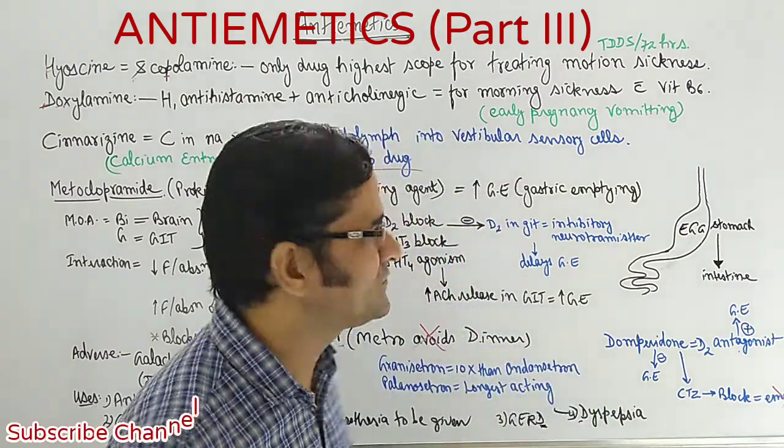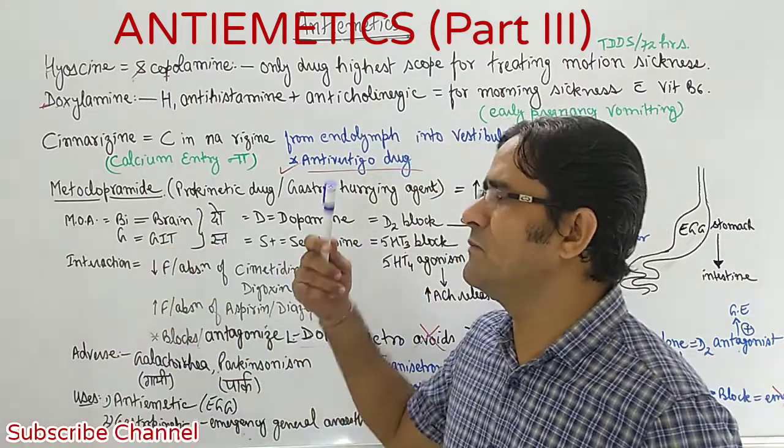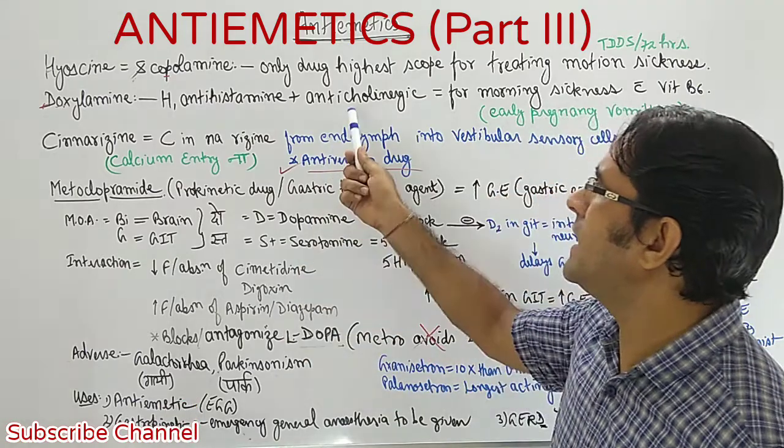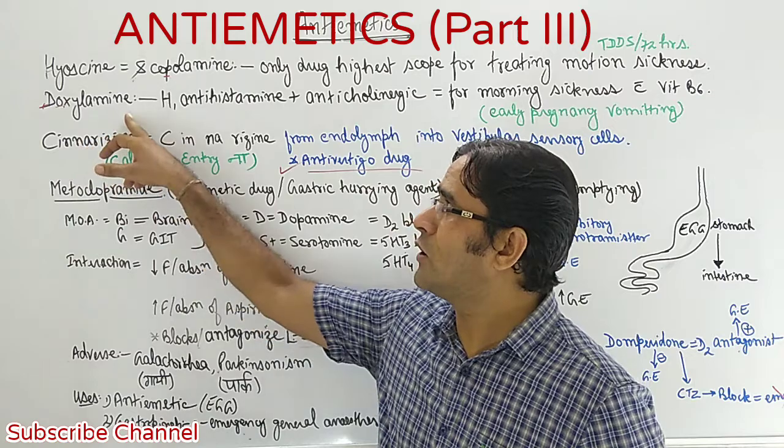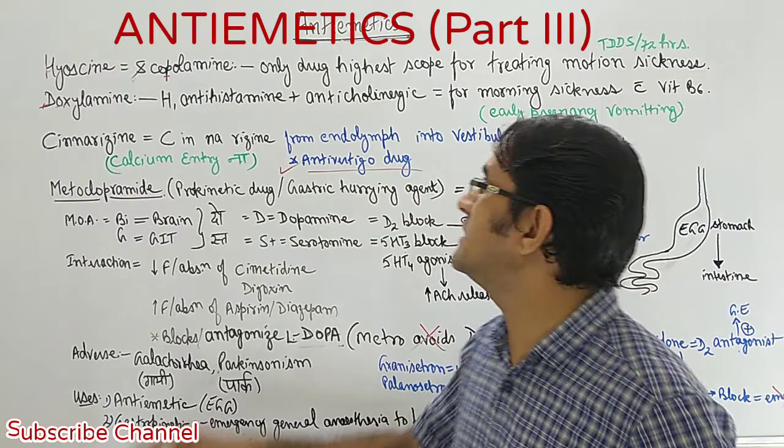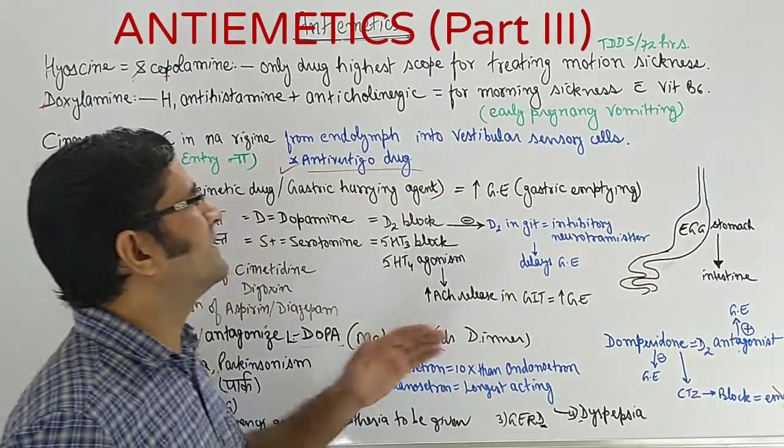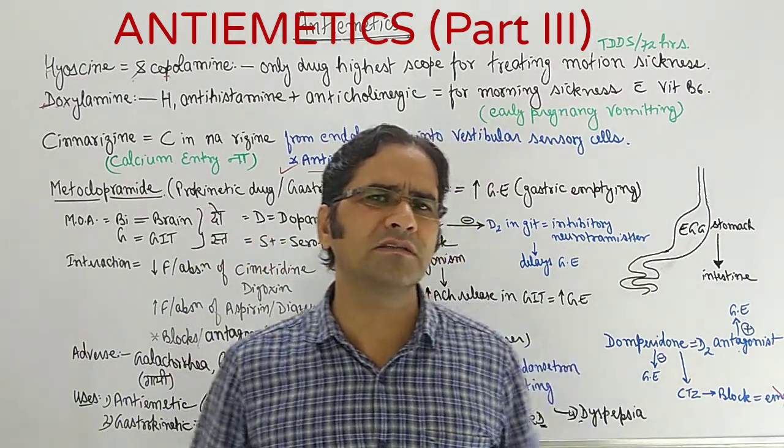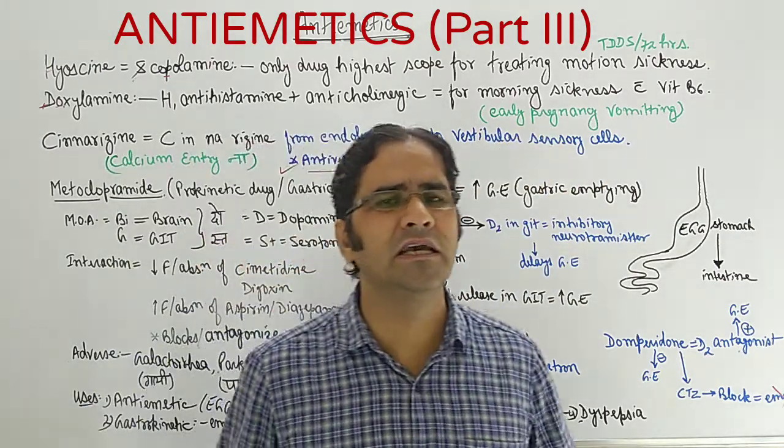Next drug is doxylamine. The important question is: doxylamine is an antihistaminic. We have already seen, apart from that, it also has anticholinergic property. It means although doxylamine is useful as antiemetic, it will have the adverse effects of anticholinergics. It is used for morning sickness with vitamin B6. Morning sickness is related to early pregnancy vomiting, and this use is particularly prevalent in India only.